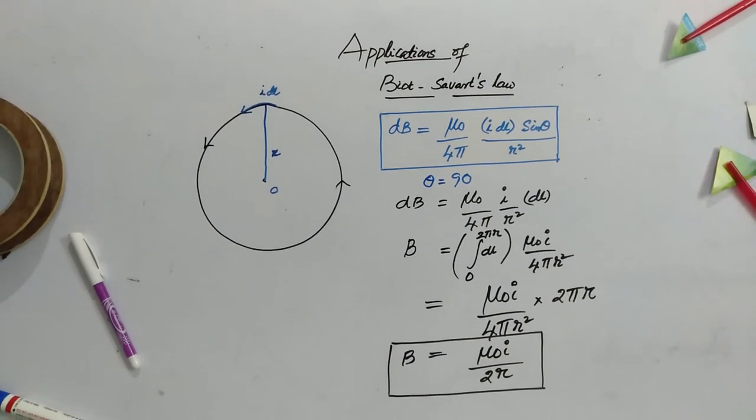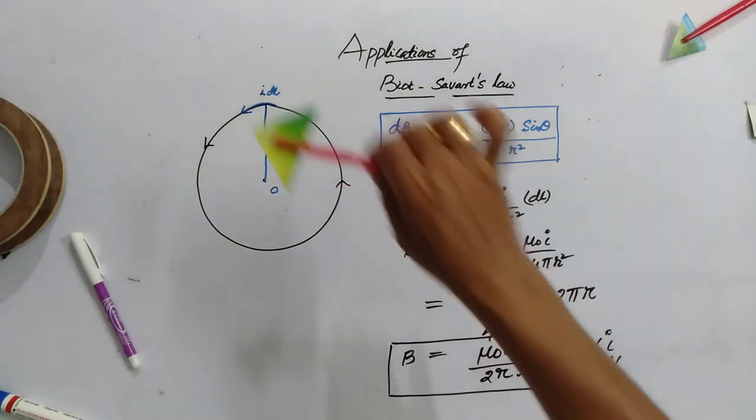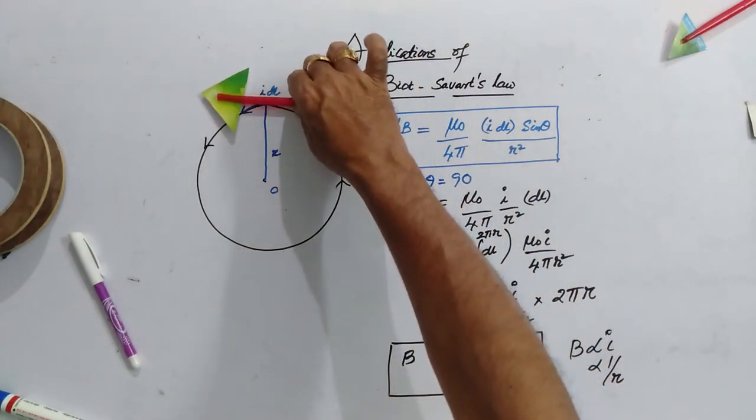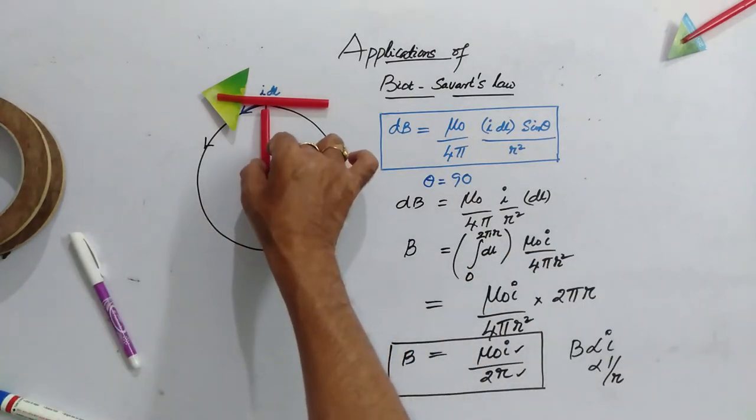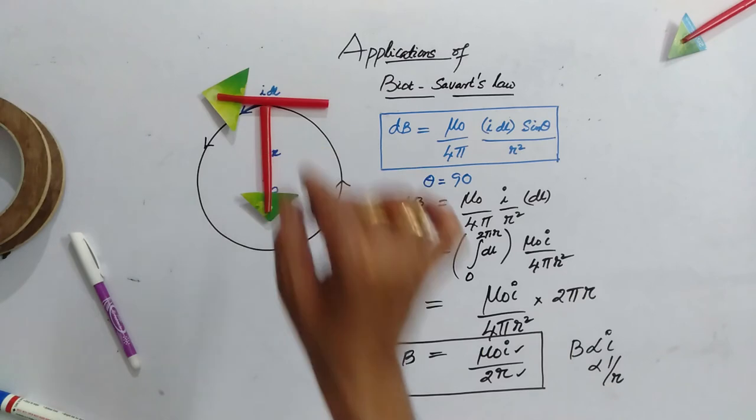This magnetic field is more when i is increased and if r is increased, the magnetic field is getting reduced. Here B is directly proportional to i inversely proportional to r. Here this is the current element and this is the radius vector.